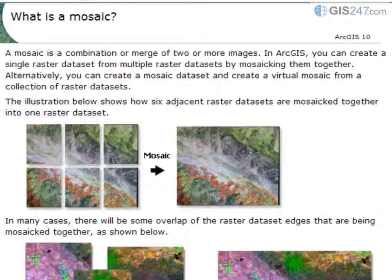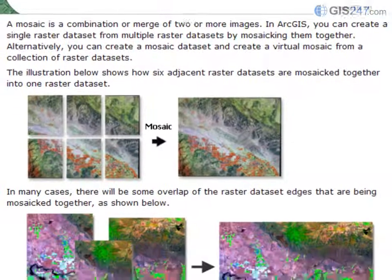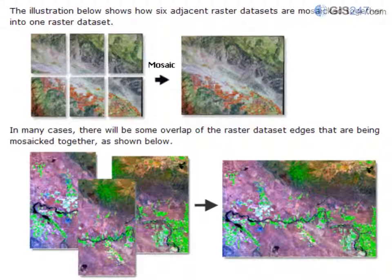A Mosaic Dataset can be generated from a library of images that may exhibit some overlapping or form a continuous grid of neighboring images. Mosaics streamline access to libraries of aerial and satellite images that cover large spatial areas.